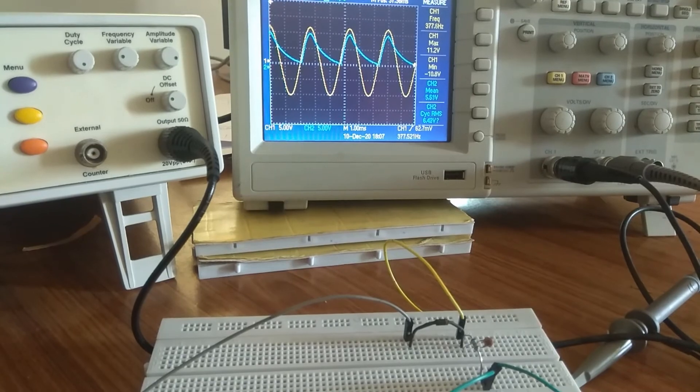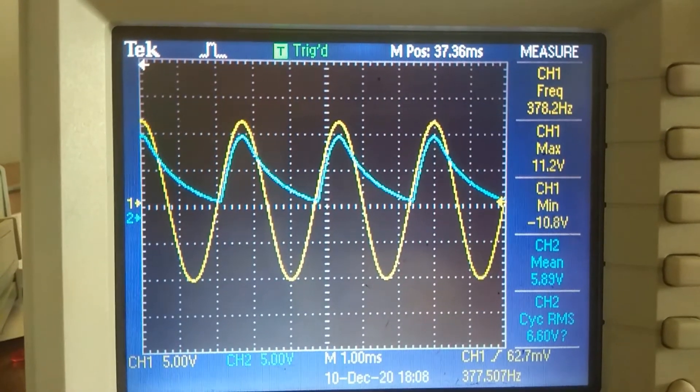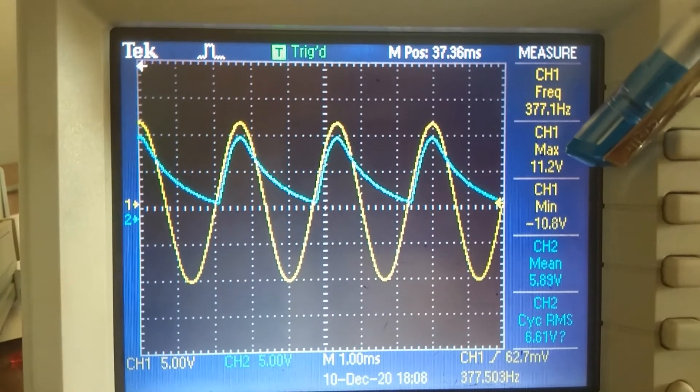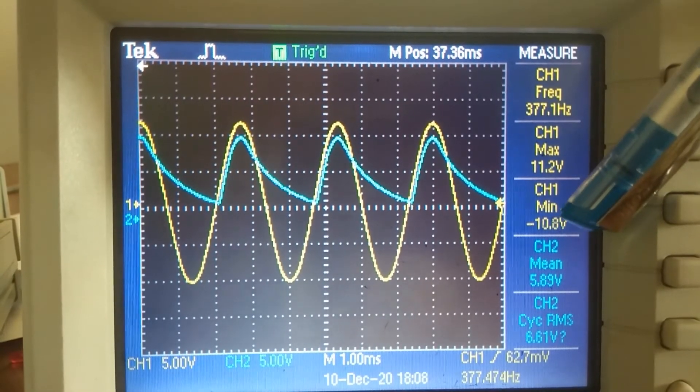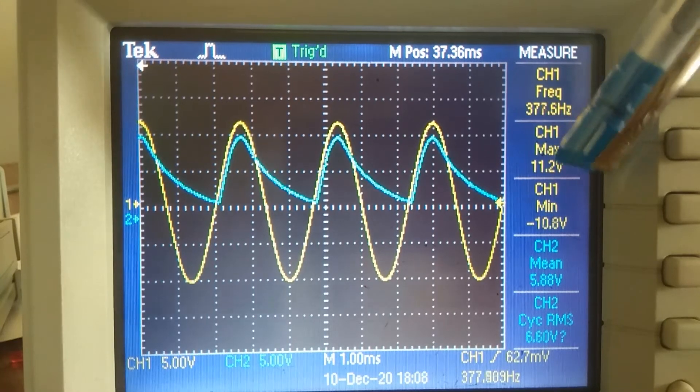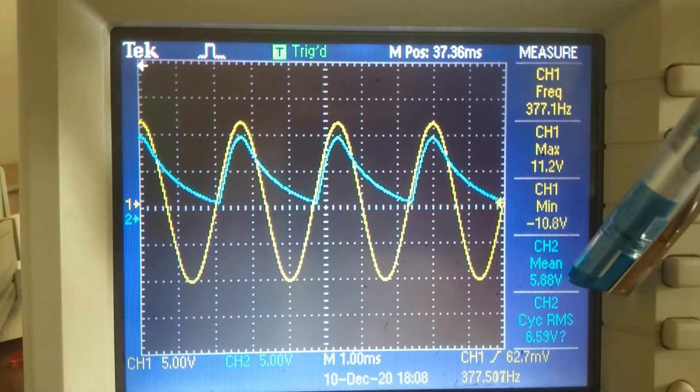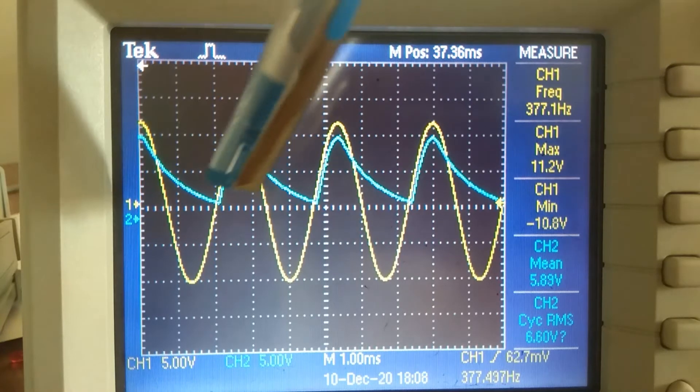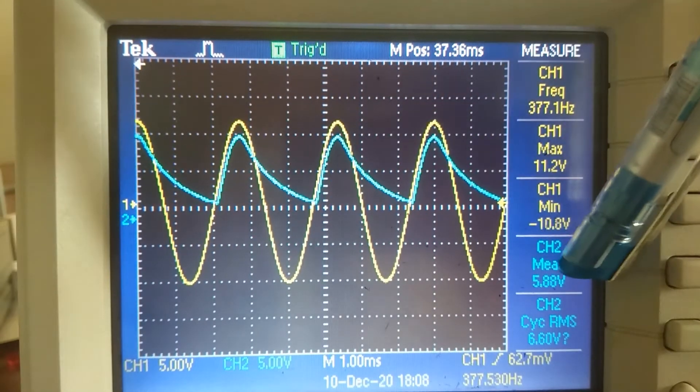Now we are going to calculate all the values. If you see, the maximum input that has been applied is 11.2 and minus 10.8, that it must be equal, that is because of function generator. The mean is 5.88 volt, DC of this component is 5.8.